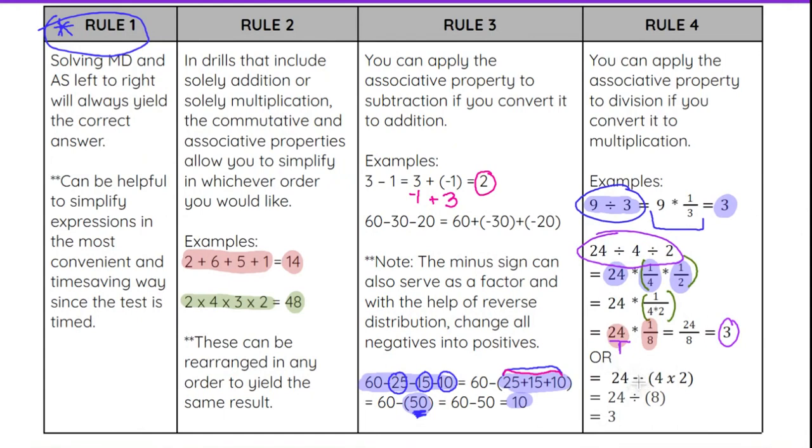And then finally, it is possible to do what we did with the subtraction symbol and changed it into subtracting a set of parentheses with addition in it. Same concept here. We can start with 24 ÷ 4 ÷ 2 and change this 4 and this 2 into 4 × 2.